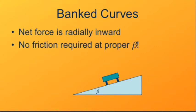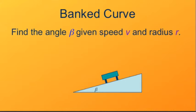If you pick the proper angle, then there will be no friction necessary, no friction between the tires and the road, necessary to keep the car in the curved path. What we'd like to do is find that angle beta given the speed and the radius.